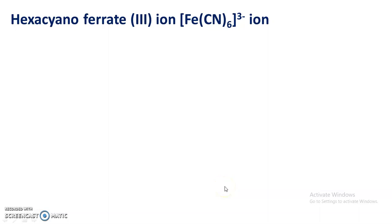Welcome to the online lecture series in organic chemistry. We are discussing the molecular orbital theory for coordination compounds. In this video, I am going to discuss the formation of hexacyanoferrate(III) ion on the basis of molecular orbital theory. Iron is the central metal ion and cyanides are the ligands. There are 6 cyanide ligands occupying the regular corners of the octahedron, making this an octahedral complex.